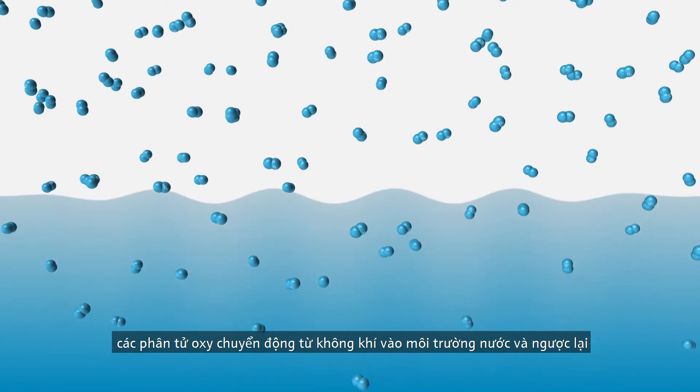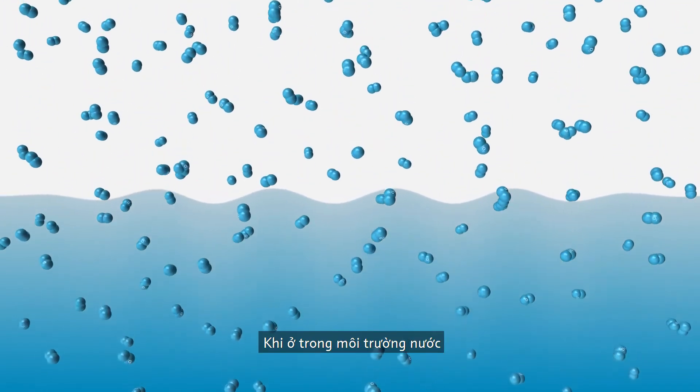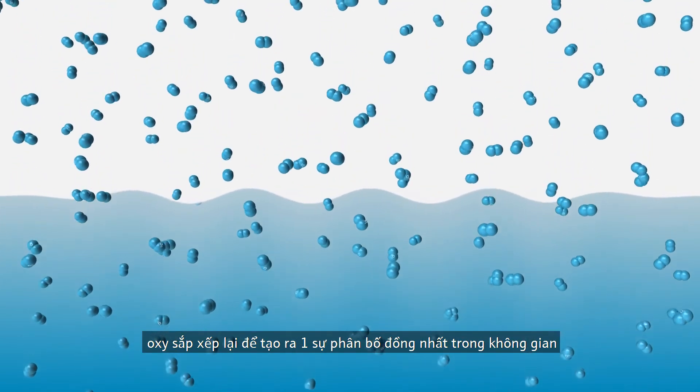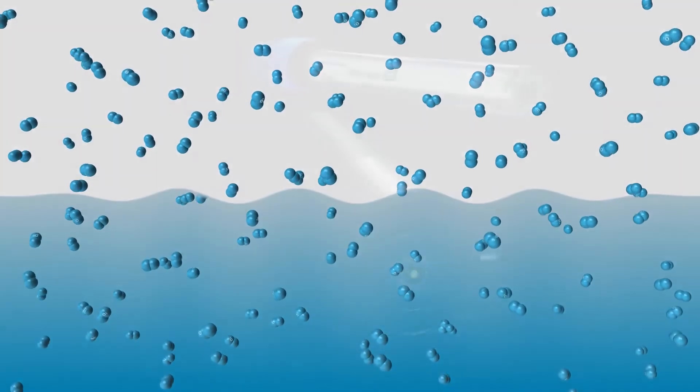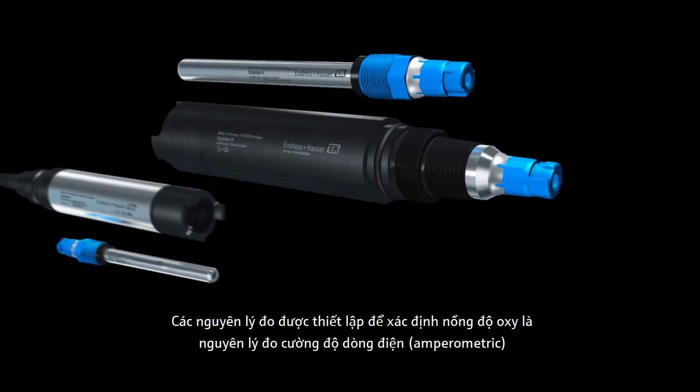Oxygen molecules migrate from the atmosphere into water and vice versa. Once the oxygen is in the water, it distributes evenly to achieve a uniform distribution in space. The established measuring principles for the determination of oxygen concentration are the amperometric and optical measurements.